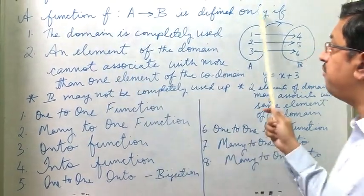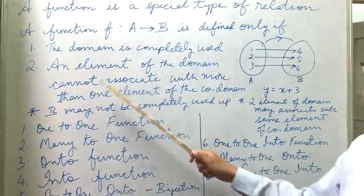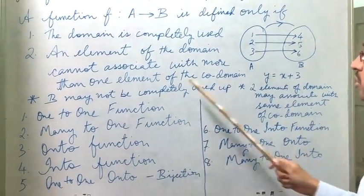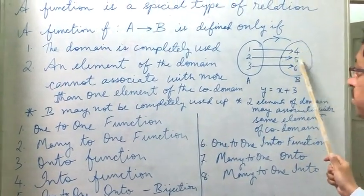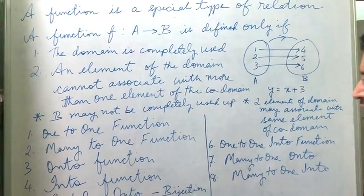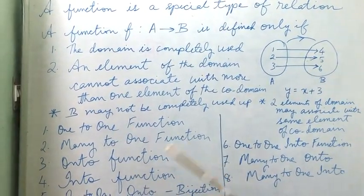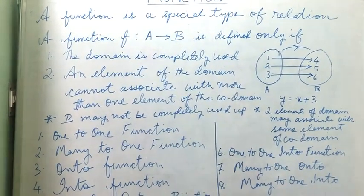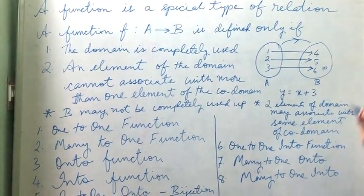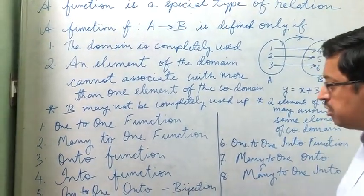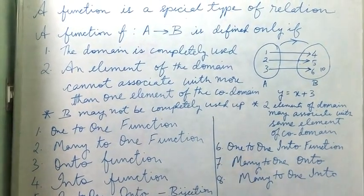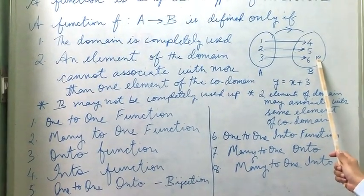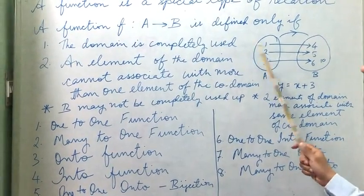The condition for a relation to be a function is that the domain must be completely used and every element of the domain must be associated with only one element of the co-domain. It is acceptable if set B is not completely used up — if there is an element in B not associated with any element in A, it is still a function.